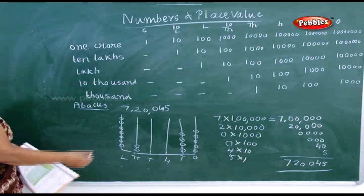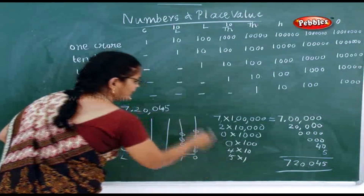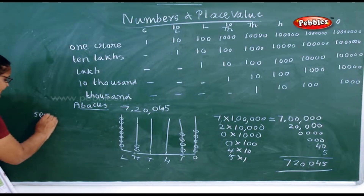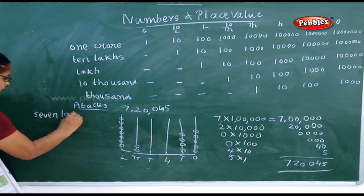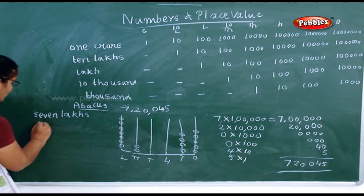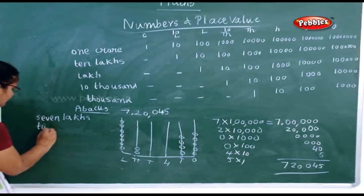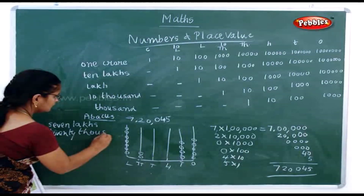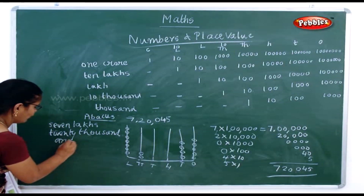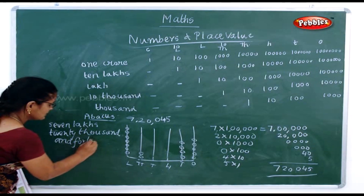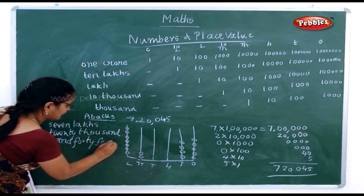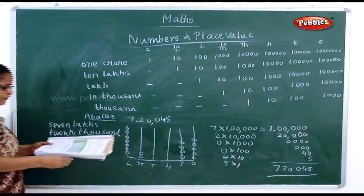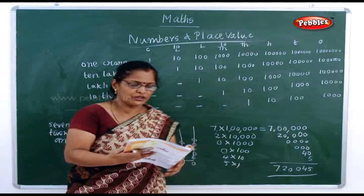Now how will you express it in words? This is what you call expanded notation, and this is the abacus form. In words, you write: seven lakhs, twenty thousand, and forty-five. This is how you have to do your abacus, expanded notation, and words.